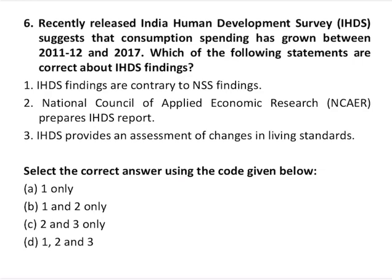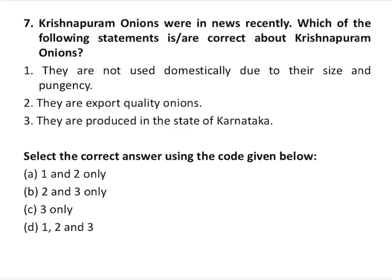Question number six: the recently released India Human Development Survey suggests that consumption spending has grown between 2011-12 and 2017. All three statements are correct: first, IHDS findings are contrary to NSS findings; second, the National Council for Applied Economic Research prepares the IHDS report; and third, IHDS provides an assessment of changes in living standards. So D — all of the above — is the correct answer.